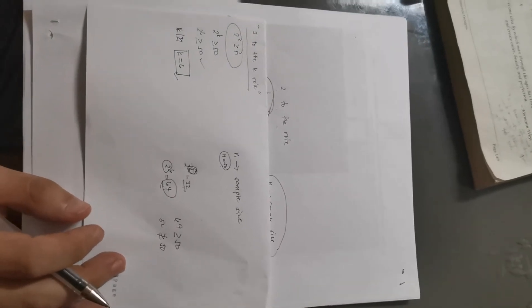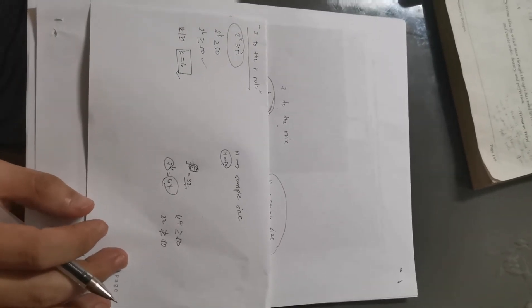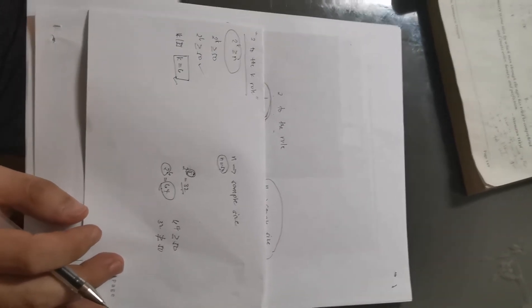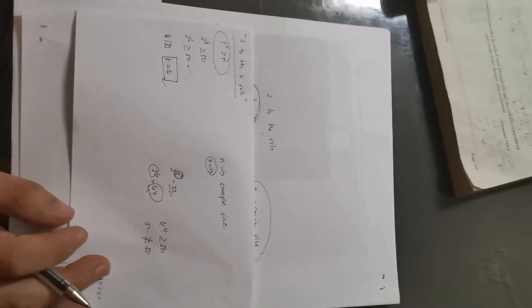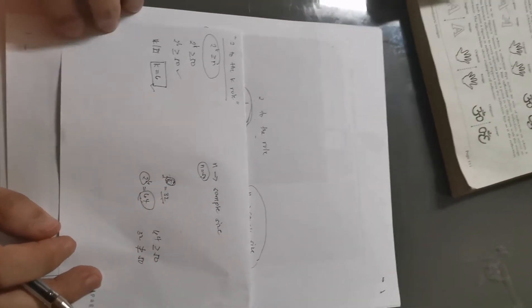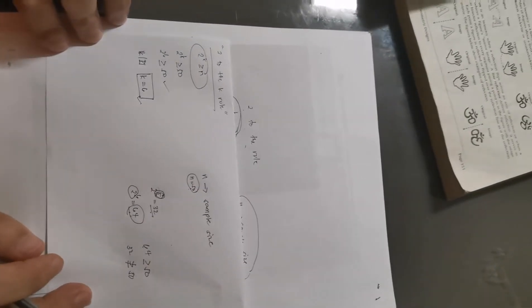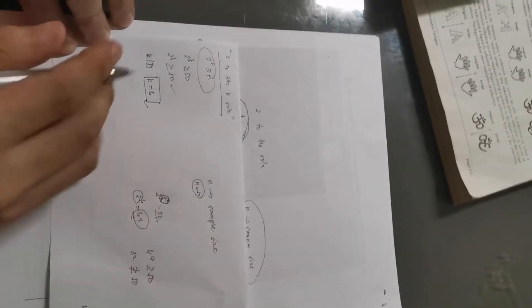Just to note, this method may not always work perfectly — especially when you have a larger sample size. But for the purpose of this discussion, this is how we use the 2 to the k rule in identifying the desired number of classes.